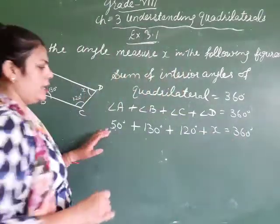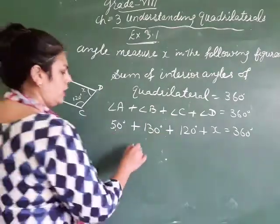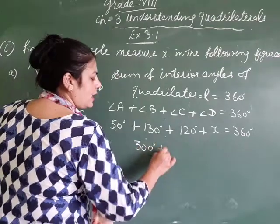So, now, we add: 130 plus 120 that is 250. 250 plus 50 that is 300 degrees, plus X.